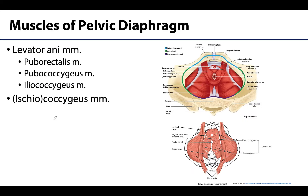The two main muscles making up the pelvic diaphragm are the levator ani muscle, one on each side, and the coccygeus, also referred to as the ischiococcygeus. Together these two muscles constitute the pelvic diaphragm. Other muscles visible here, such as the piriformis or obturator internus, are considered parts of the walls of the pelvis and not part of the pelvic diaphragm.